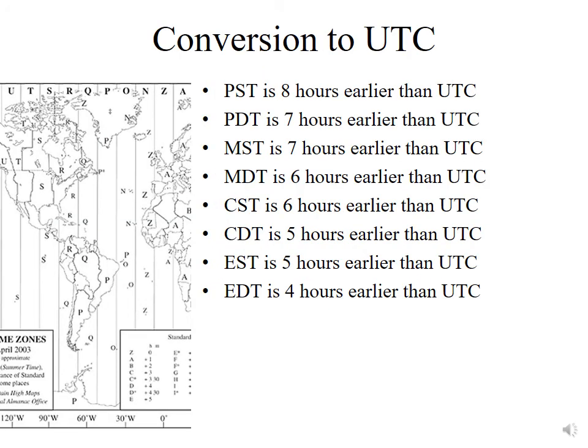When we look at a weather map, it's important to understand what the time code means. Pacific Standard Time is eight hours earlier than UTC, and when they move to daylight time they jump ahead one time zone — from zone U to zone T — which is only seven hours off. In Mountain Standard Time we're normally seven hours off, but during daylight saving time we're only six hours off. The Central time zone is one hour closer to UTC, as is the Eastern time zone.